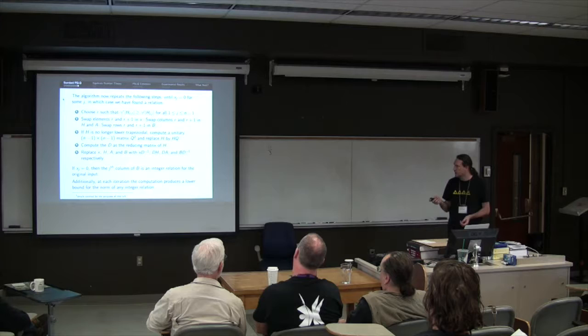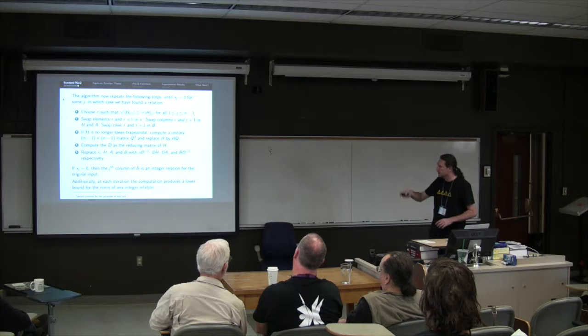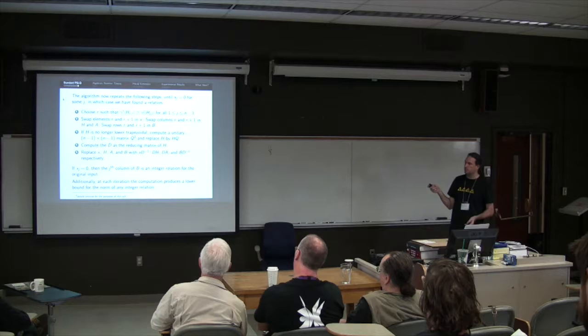So this x vector is being updated. It's not going to be the original vector we put in. If we find an x j equals zero, that tells us that the jth column of v is an integer relation. We stop, spit it out, and we're done.